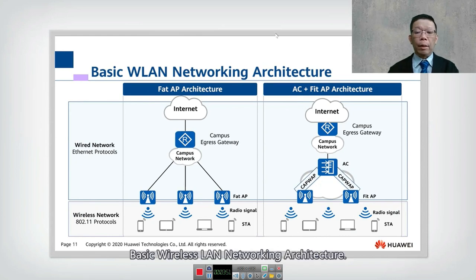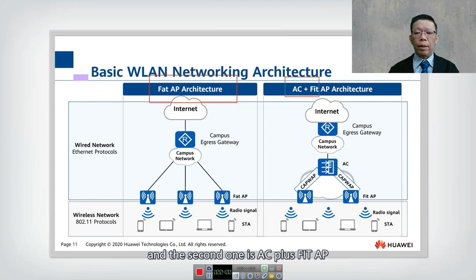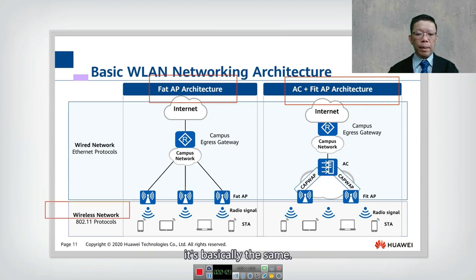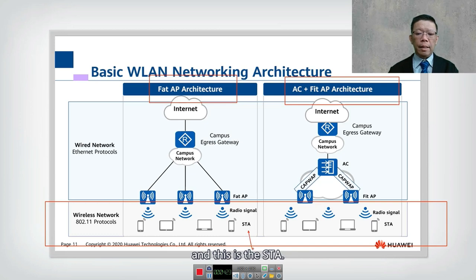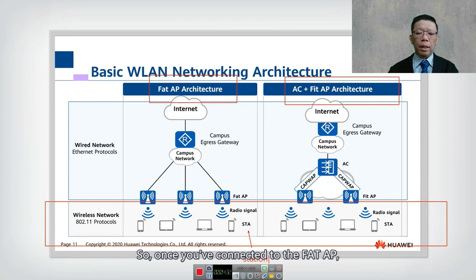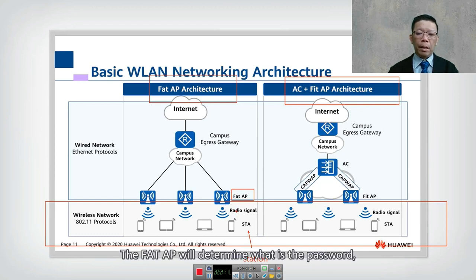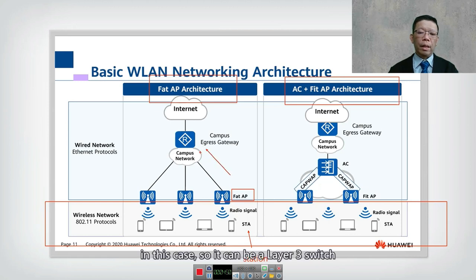There are two basic wireless networking architectures: the Fat AP architecture and the AC plus Fit AP architecture. In both cases, the wireless network uses 802.11 — such as 802.11a/g/n/ac or ax — with radio signals and STAs (stations), which are your laptops, tablets, or mobile phones. In the Fat AP architecture, the Fat AP handles the password, encryption, decryption, and control before passing traffic to a Layer 3 switch or router.